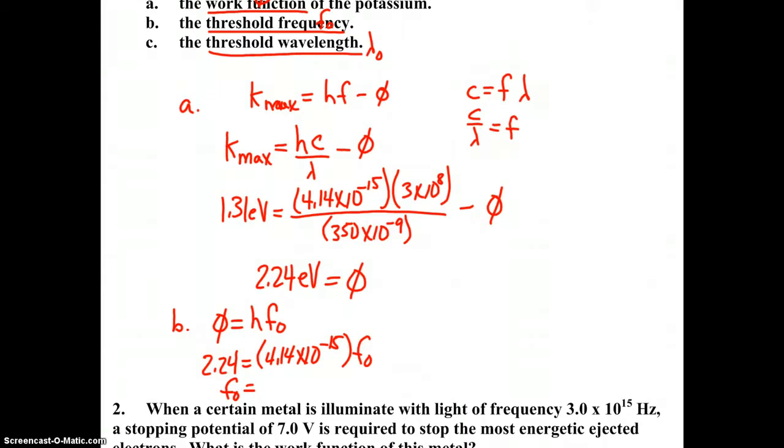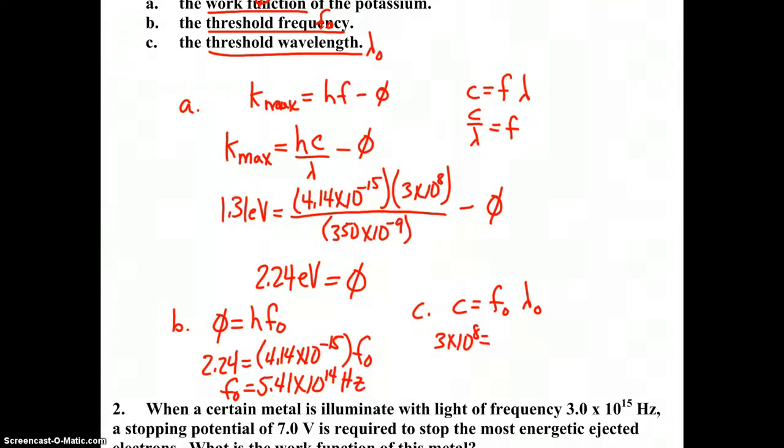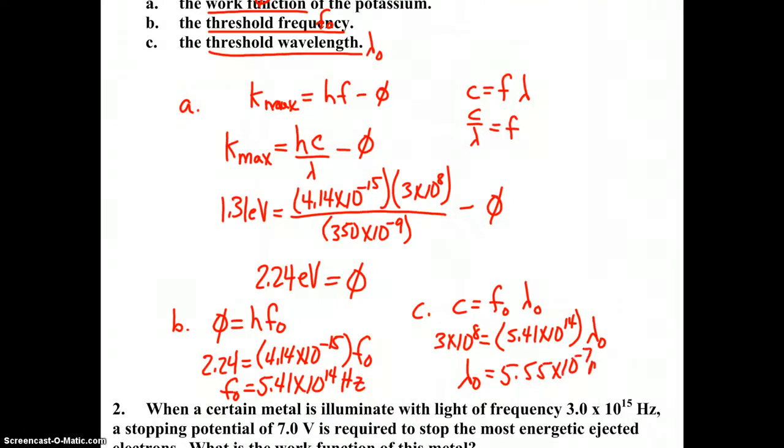For the threshold wavelength, again this is light, so we make the connection c equals f lambda, but with threshold frequency and threshold wavelength specific. 3 times 10 to the 8th equals 5.41 times 10 to the 14th. Solving for the threshold wavelength, we get 5.55 times 10 to the negative 7 meters. That's our solution to number one.